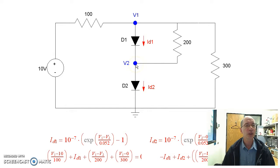I can then do voltage node analysis to say the currents have to add to zero. So at V1, I get this equation: current through the 100 ohm resistor, current through the diode, the 200 ohm and 300 ohm have to add to zero.